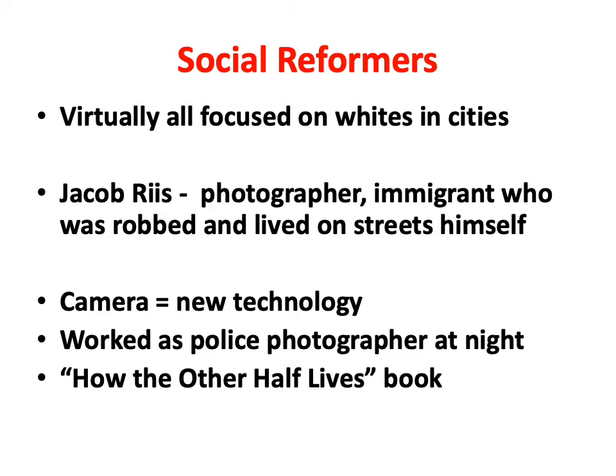One of the best known social reformers was Jacob Riis. He was from Scandinavia. He emigrated to the United States with a little money, but was robbed on the streets, lost everything he had, and lived in extreme poverty on the streets. He was a photographer, and he became well known through his photographs. A photograph is worth a thousand words, and the camera was a revolutionary new technology.